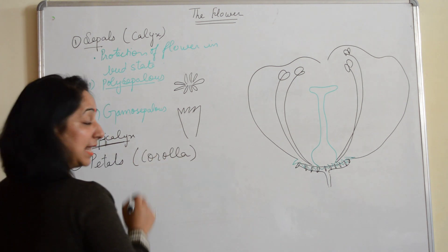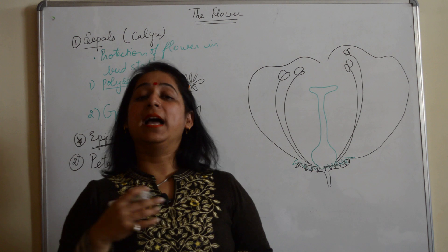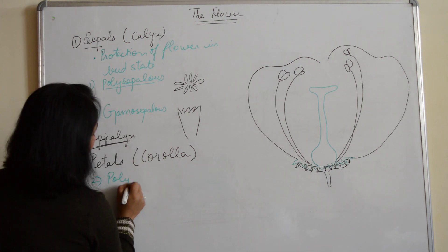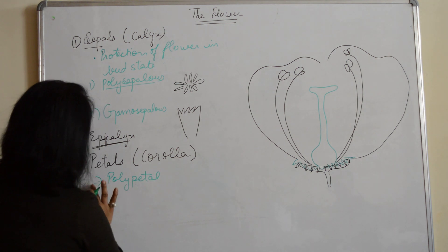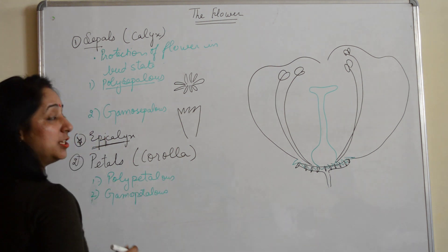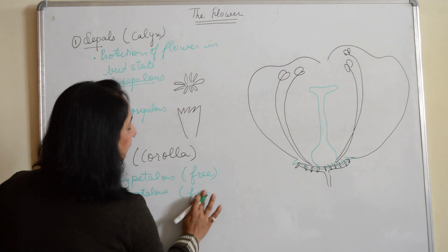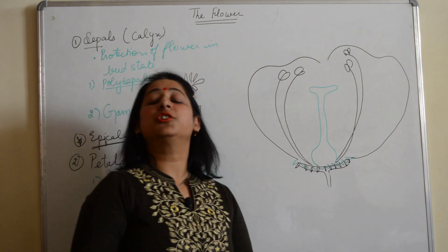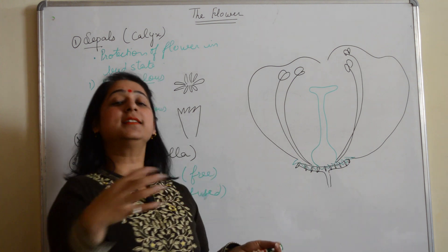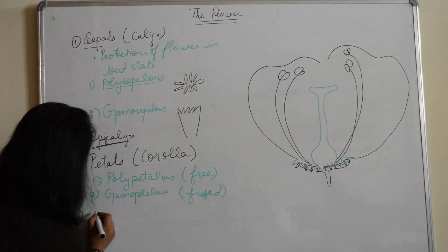The next part is the petals. Petal is the singular term and corolla is the collective term. Corolla or petals are the beautiful, brightly colored parts of the flower. Here also we have two conditions — polypetalous, where the petals are free, and gamopetalous, where they are fused. The main function of the corolla is to attract insects for cross-pollination. Being brightly colored, insects get attracted to the plant and cross-pollinate. We will discuss cross-pollination in our next video.